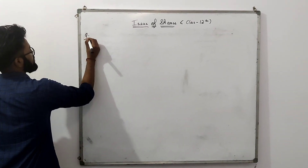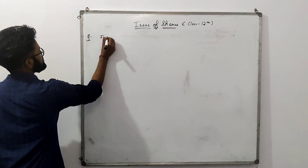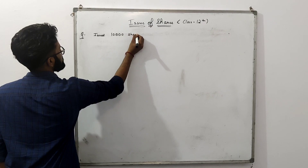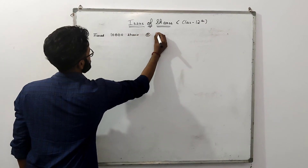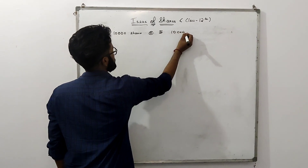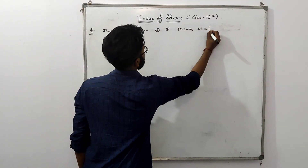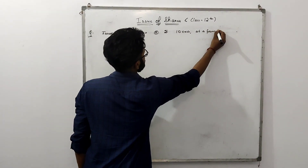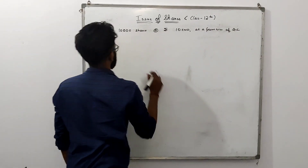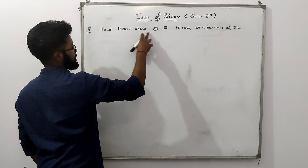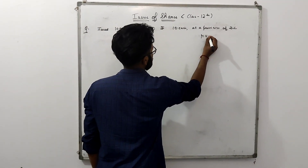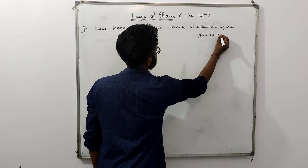Question: Issue 10,000 shares at the rate of Rs. 10 each at a premium of Rs. 2. So the company has issued 10,000 shares at Rs. 10 each at a premium of Rs. 2. The market value is 10 plus 2, which is equal to Rs. 12.